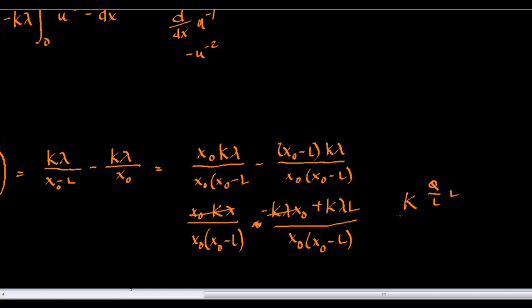And, then, there's l here over the denominator. Oh, I'm sorry, yeah, the denominator. And, so, the l's will cancel and you'll get kq over x naught x naught minus l. Okay? That were all the way.